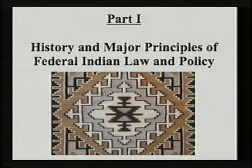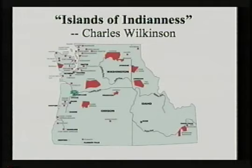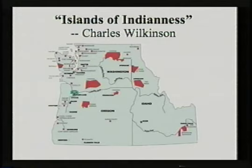Let's begin part one, which concerns the history and major principles of Federal Indian Law and policy. We'll first take a quick glance at the modern picture. Indian country is occupied by numerous tribes, diverse in their geographic location, cultural background, and history. At present, there are over 562 federally recognized tribes and at least 169 more tribes lacking Federal recognition. There are approximately 300 federally administered Indian reservations, most located in the west.